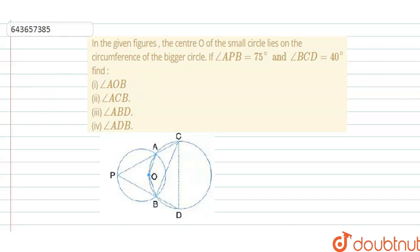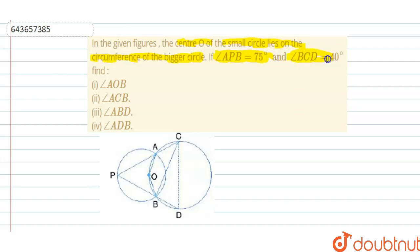Hello everyone. The question says that in the given figures, the center O of the small circle lies on the circumference of the bigger circle. If angle APB is equal to 75 degrees and angle BCD is equal to 40 degrees, find angle AOB, angle ACB, angle ABD and angle ADB.